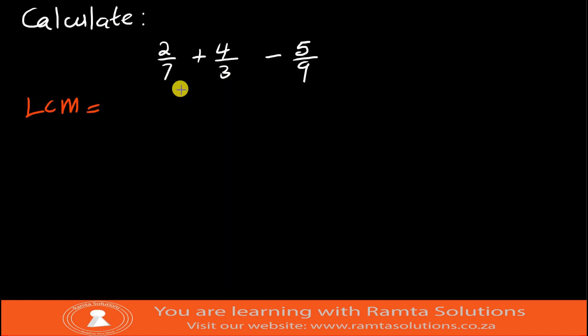In this case, please do not try 7 times 3 times 9, it's going to be long. How about we try 7 times 9? It will give us 63, and trust me, 63 is divisible by 7, it is divisible by 3, and it is also divisible by 9.